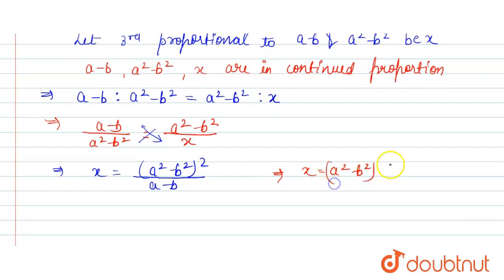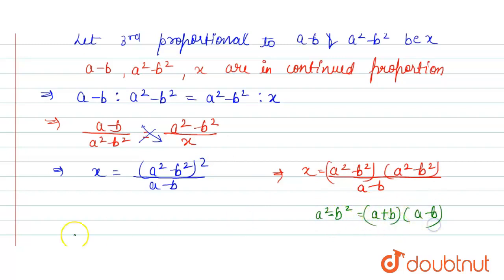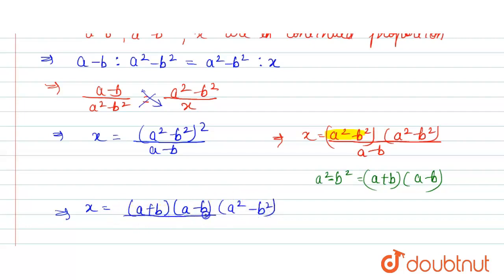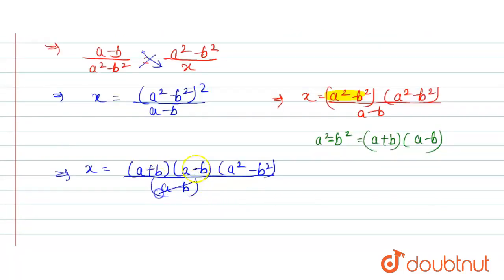So x is equal to a squared minus b squared into a squared minus b squared divided by a minus b. We know the formula of a squared minus b squared, that is a plus b into a minus b. So in place of a squared minus b squared we use this identity. From here x is equal to a plus b into a minus b, and a squared minus b squared divided by a minus b. Here the a minus b cancels, so value of x is equal to a plus b into a squared minus b squared.